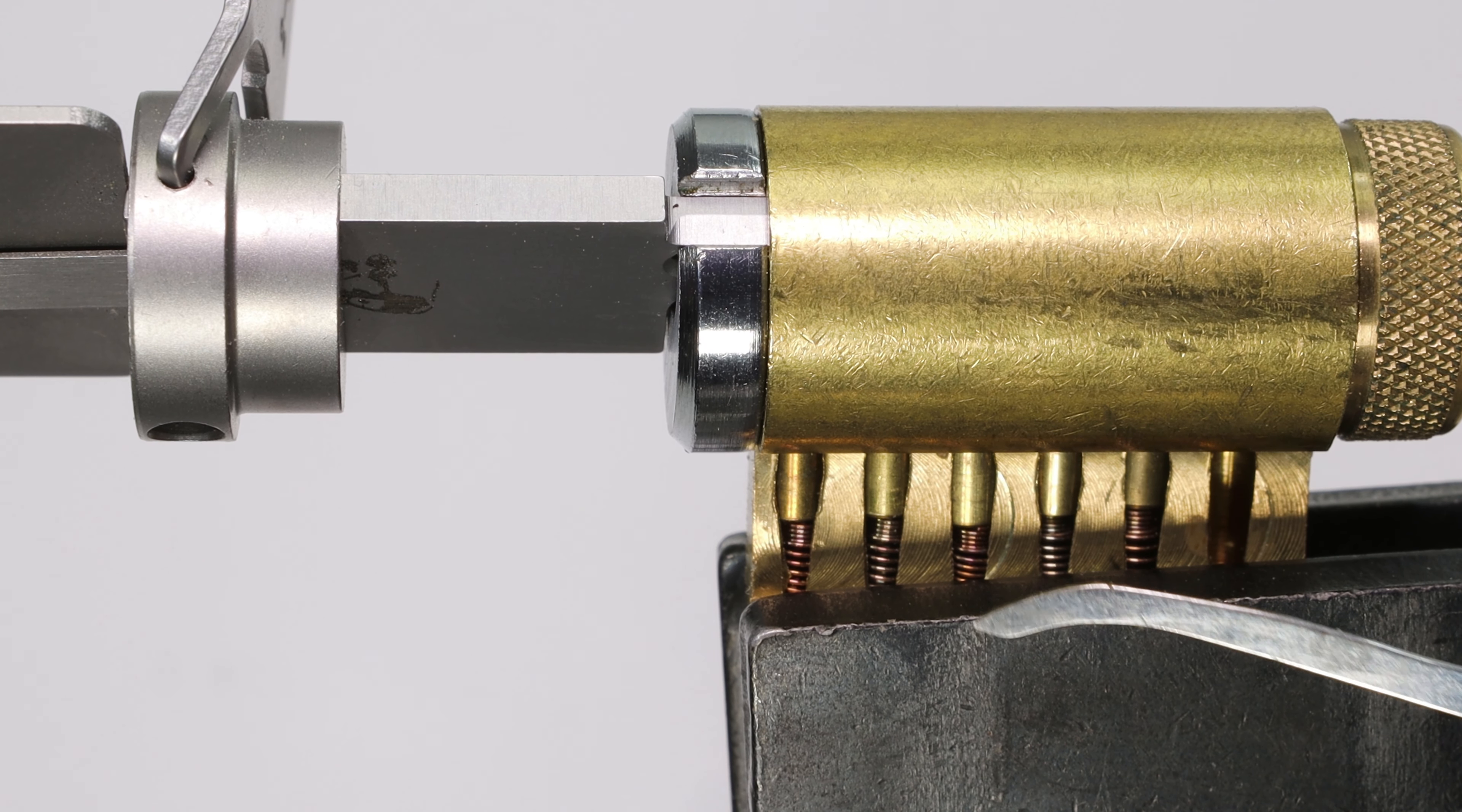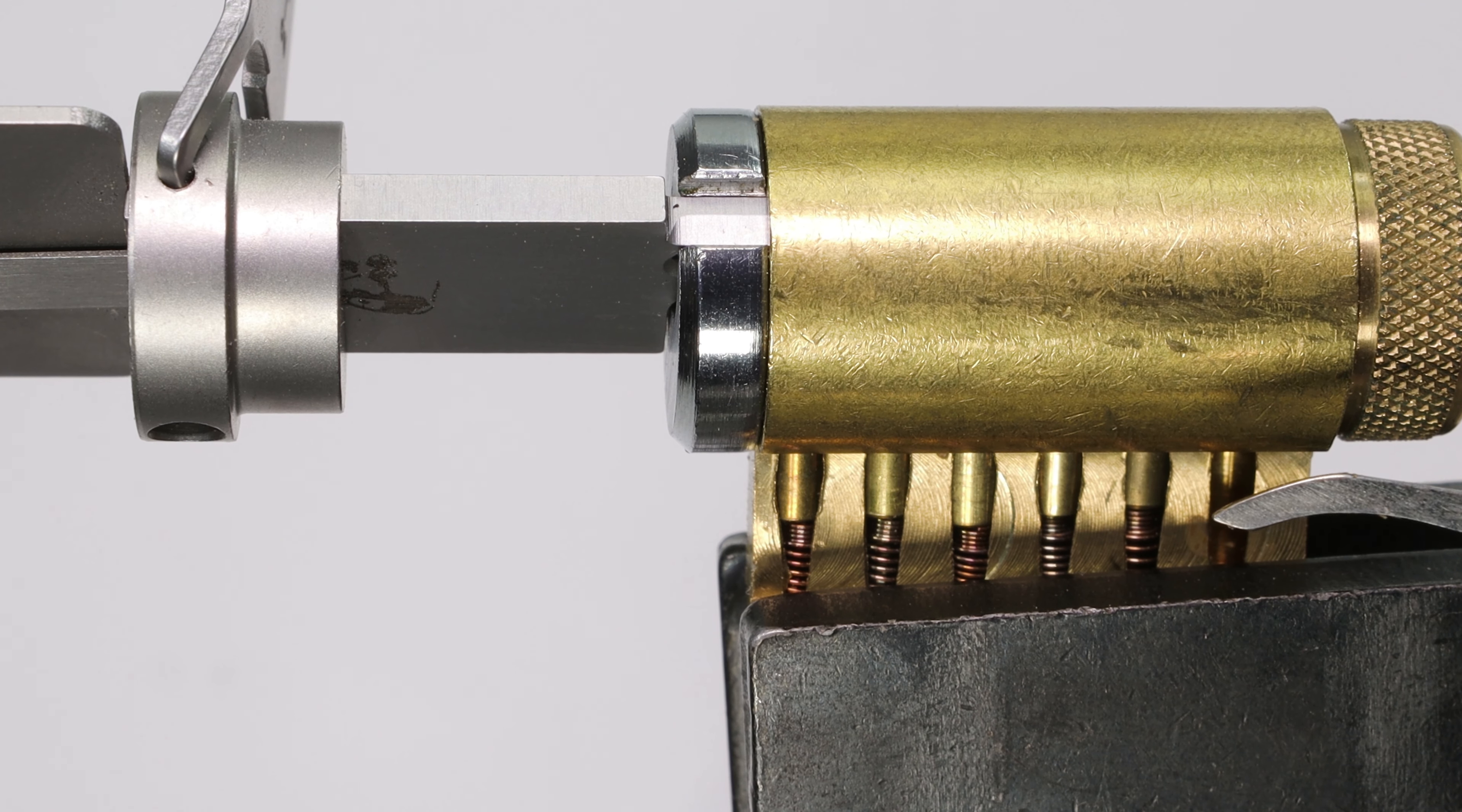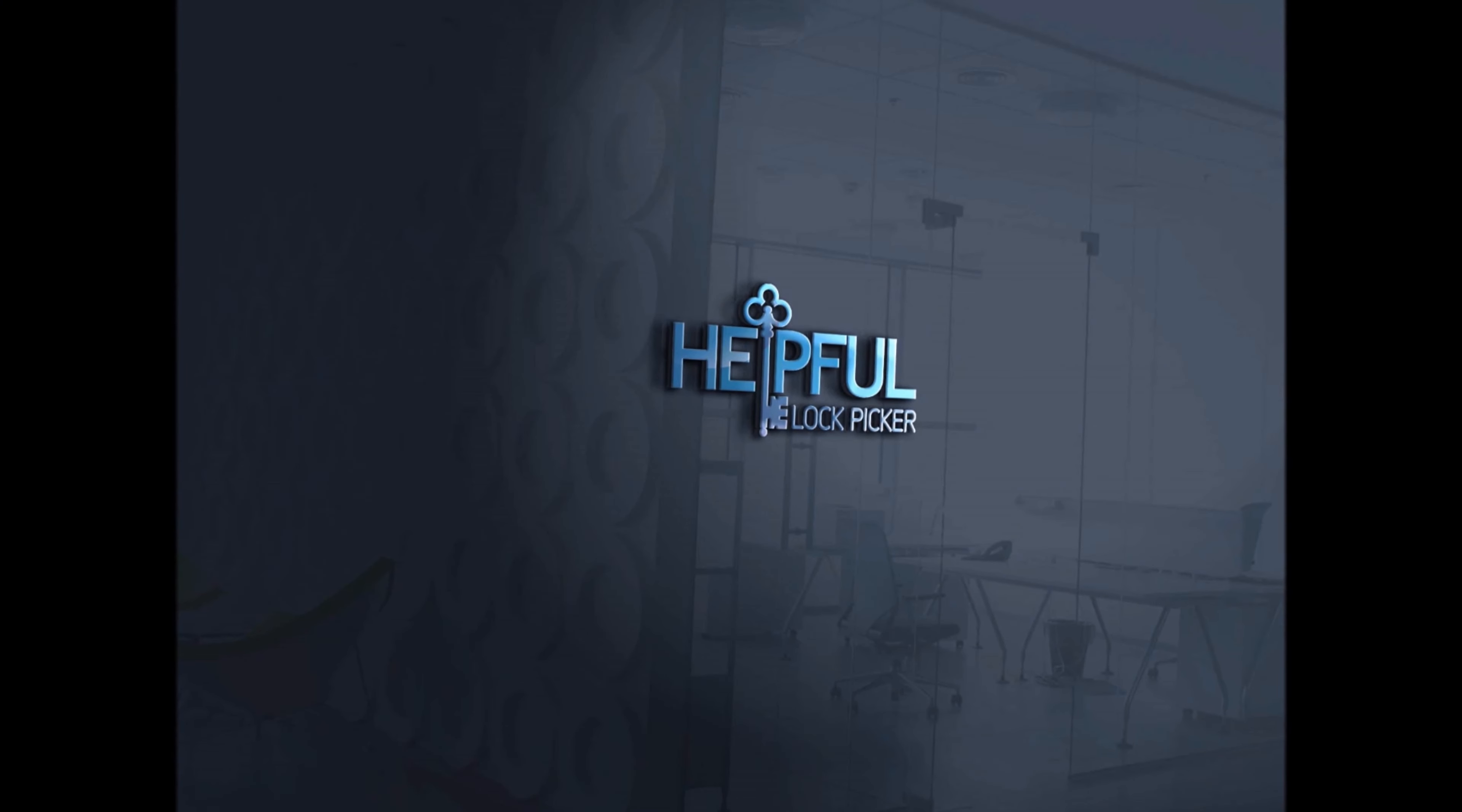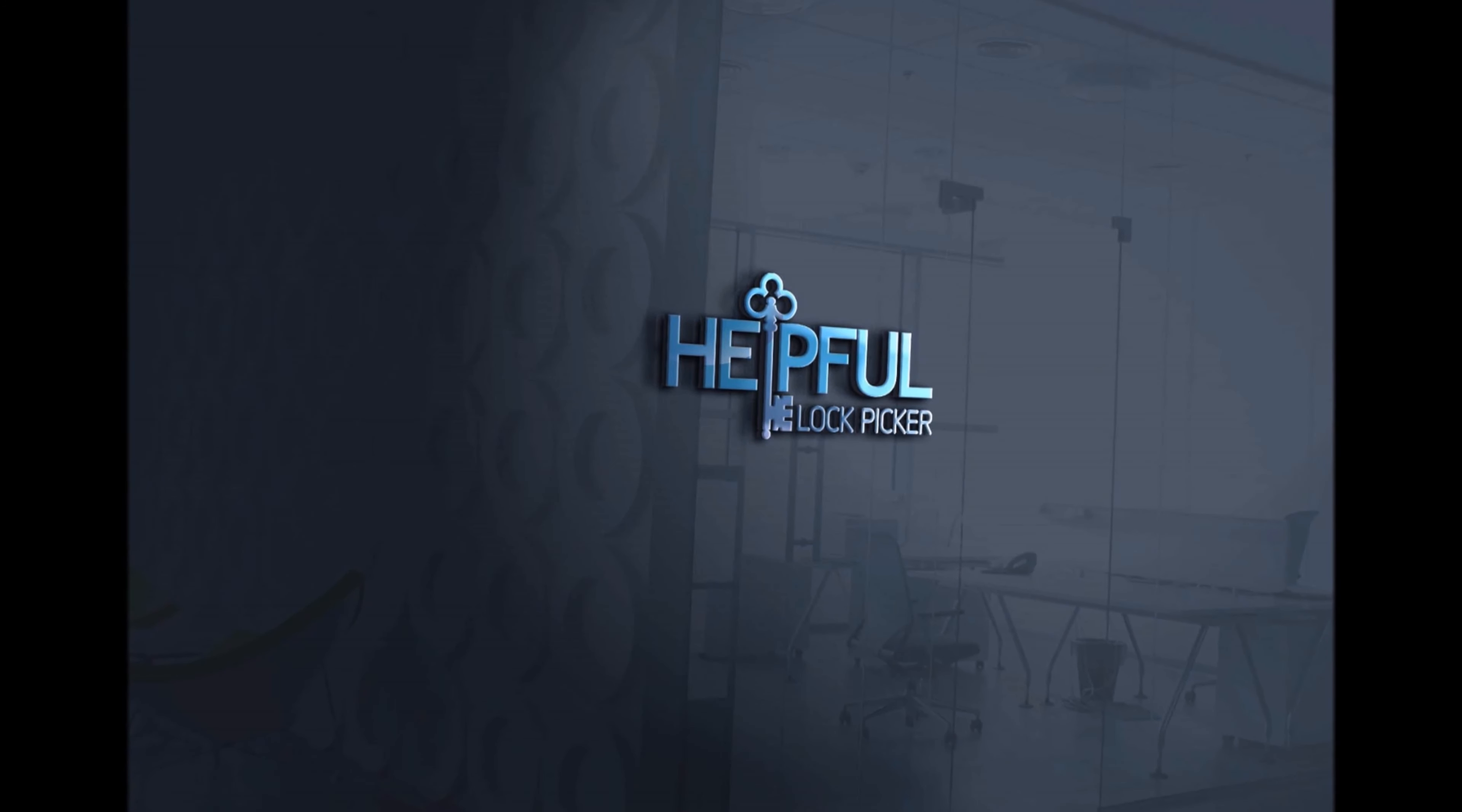But either way guys, this is all that I have for you today. This has been a really quick tip on what a set pin feels like when you're picking a lock upside down, also known as the pins down position. Either way guys, if you have any questions or suggestions, as always, please leave them in the comment section below. If you enjoyed this video and you'd like to see more like it, please subscribe. As always, thank you so much for checking out this video, and I hope you all have a great day, and I cannot wait to see you in the next video.